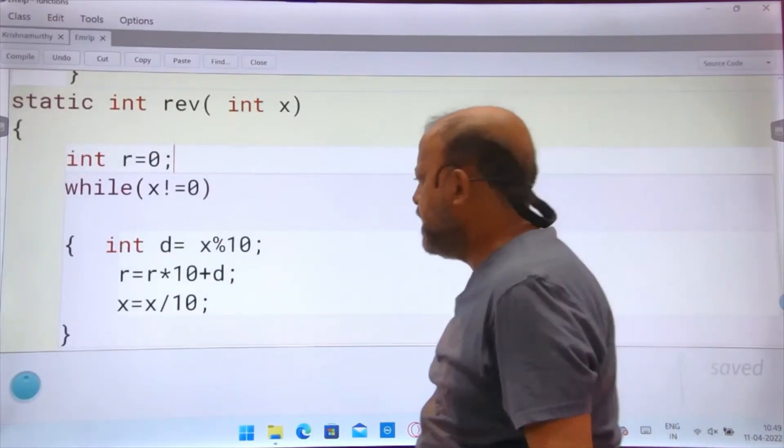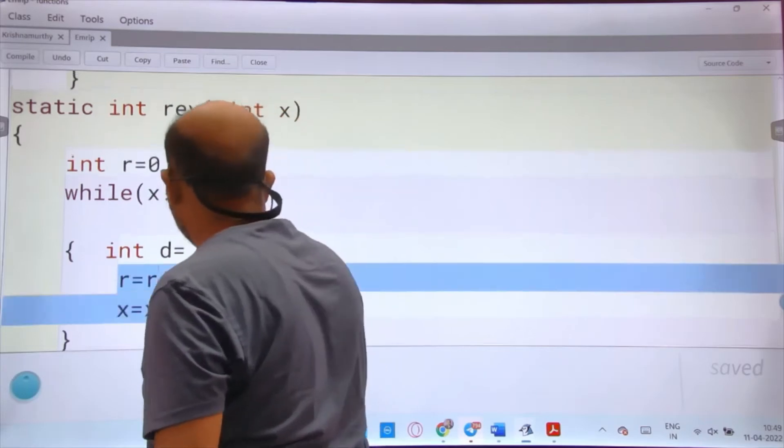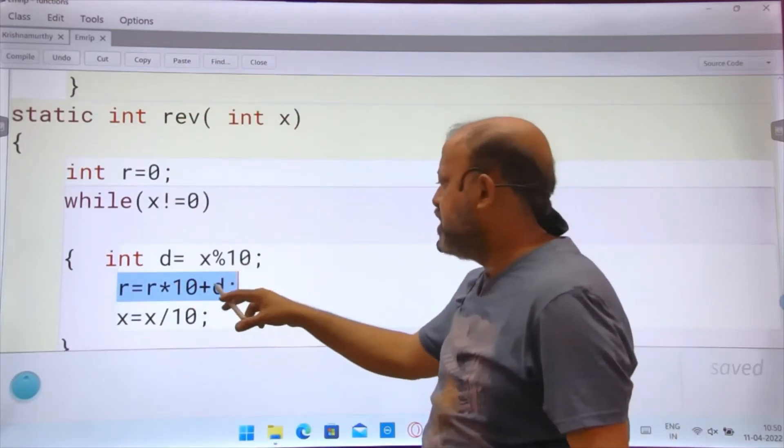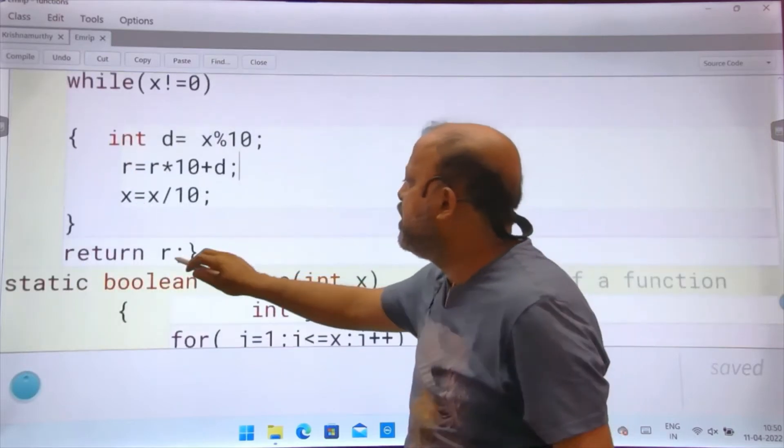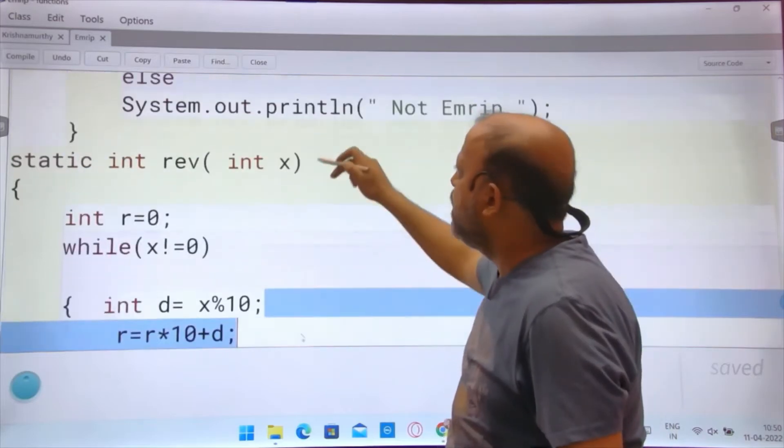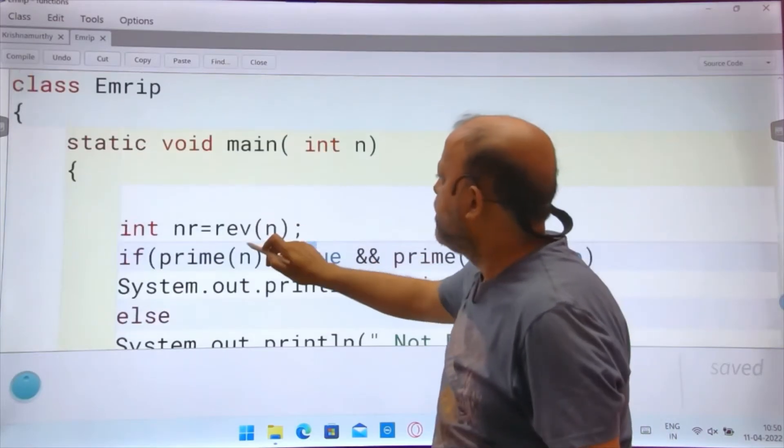I think first I have defined reverse. See, I hope all of you know how to do reverse in while loop. The reverse line r equals r into 10 plus d, you extract one digit, reverse it, and finally at the end you are returning r. This is reverse, it is returning a value. Where is it going? Here, wherever I will call.